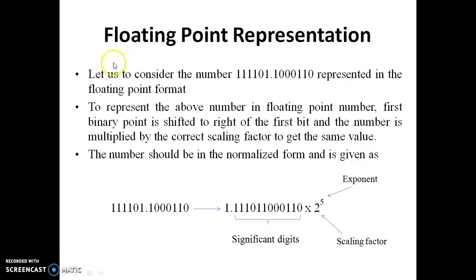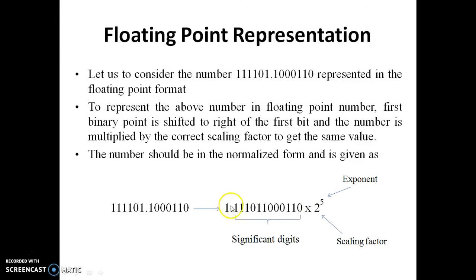Let us consider the number 1.1 times 10, represented as 101.11100010. It is converted into normalized form, so the point is shifted to the leftmost bit of the given number. You can see: 1.11101100010 times 2 raised to 5. The first bit shows the sign, the rest of the bits after the point are called significant digits, and the power of 2 is called the exponent. You can also call it the scaling factor.